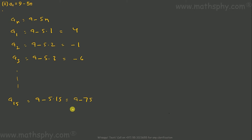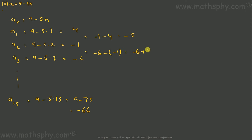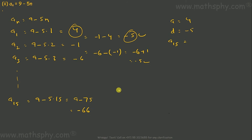Let's find the common difference d. a2 minus a1 is negative 1 minus 4, which is negative 5. And a3 minus a2 is negative 6 minus negative 1, which is also negative 5. We can see d is uniform, so a is 4 and d is negative 5, confirming this is an AP. The 15th term a15 is negative 66.